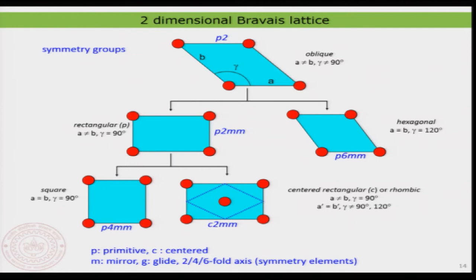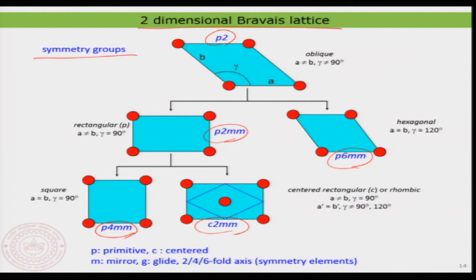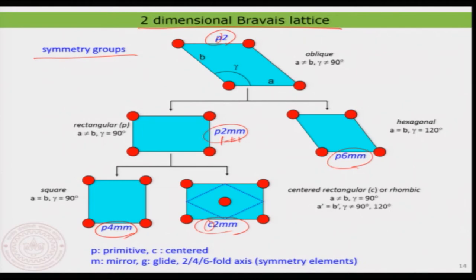We looked at the typical Bravais lattice — specifically the two-dimensional Bravais lattice, which has 5 types. All surface symmetries fall under 5 symmetry groups: P2, P2mm, P6mm, C2mm, and P4mm — corresponding to oblique, rectangular, hexagonal, square, and centered rectangular. The number represents the symmetry fold (2-fold, 6-fold, 4-fold), M represents mirror planes, C indicates something in the middle of the unit cell (centered), and P denotes the primitive cell.